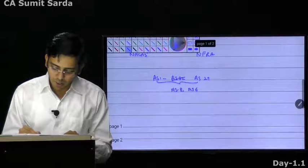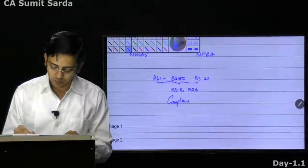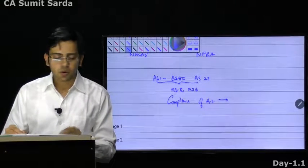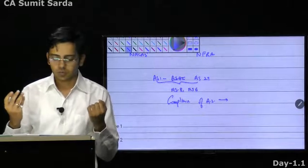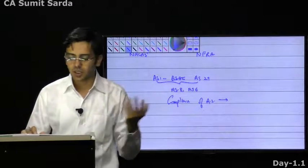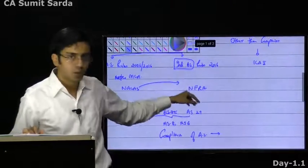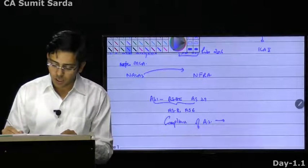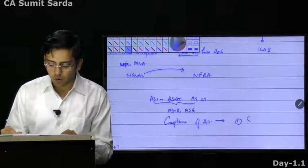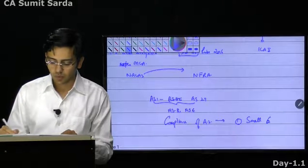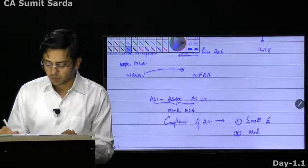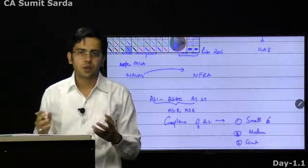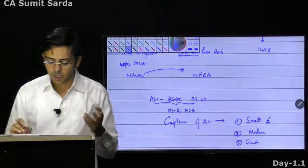So when I talk about compliance of accounting standards, compliance has been split into three parts: small, medium, and really giant enterprises. There is no official name — 'small, medium, and giant' is just a way I am presenting the data. It is really split into Level 1, Level 2, and Level 3 enterprises.